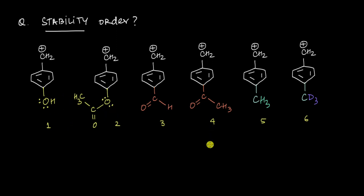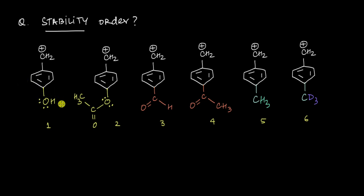Let's start by looking at this particular OH group, which has a lone pair of electrons attached to it. This lone pair of electrons is connected to a double bond, so there can be resonance here. These electrons can get pushed into the benzene ring, which is going to increase the electron density of the system — bringing about a negative charge into the benzene ring. So this OH is what we call a +R group: it increases the electron density of the system by resonance.